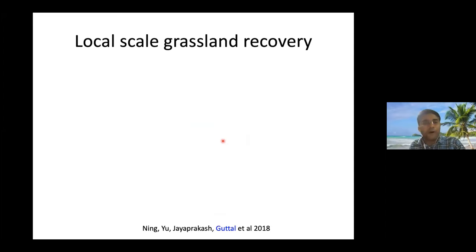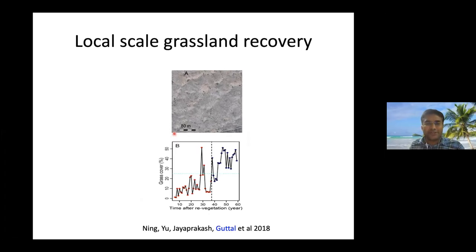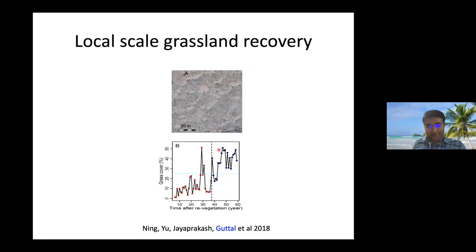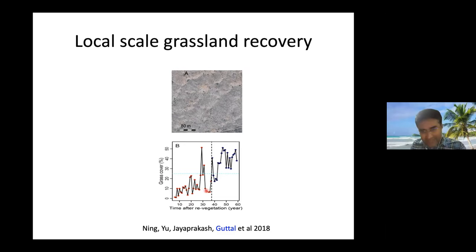Here is another example of the opposite type, on a much more local scale — not continental scale, but really a half-kilometer by half-kilometer area in China. Over the last 60 to 65 years, the grass cover in this area has changed. It used to be a low grass cover area, and it has now settled into a larger grass cover area. This was an example of a restoration of a grassland ecosystem, staying in the low state for several decades before switching to a moderately covered grassland state.